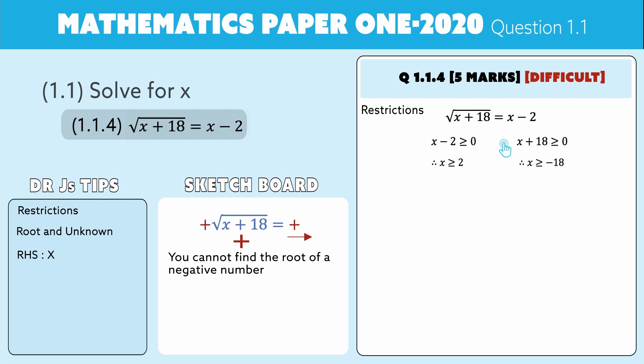We go to a number line. Here's minus 18 and there is 2. The one restriction says bigger and equal to 2, so it goes to the right of 2. The second restriction says bigger or equal to minus 18, so it goes to the right of minus 18. They start overlapping there, so the big thing now is we now have our primary restriction. Our answer has to be bigger than 2.